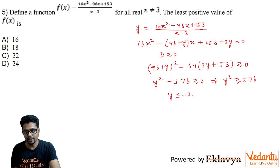So you have y less than or equal to minus 24 or y greater than or equal to 24. So what we want is the least positive value of f of x. So the least positive value of y or f of x is 24.